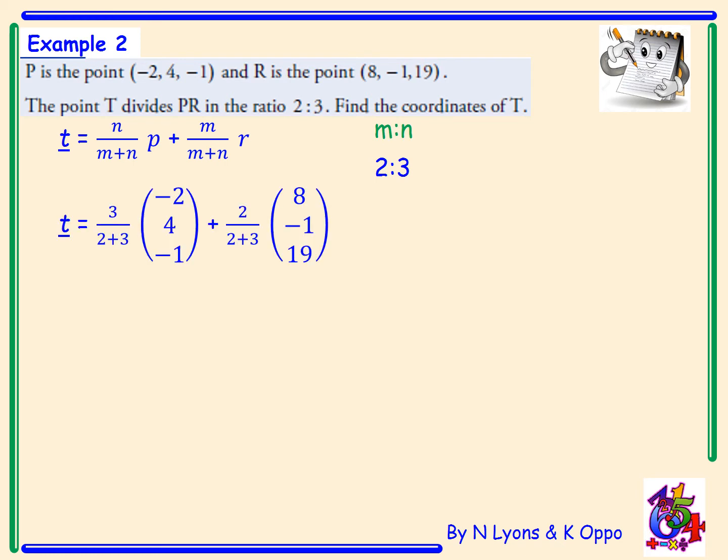This results in 3 over 2 plus 3 of P, which was (-2,4,-1), add on 2 over 2 plus 3 of R, and R was (8,-1,19). Simplifying the fractions will give us 3/5 of P plus 2/5 of R.